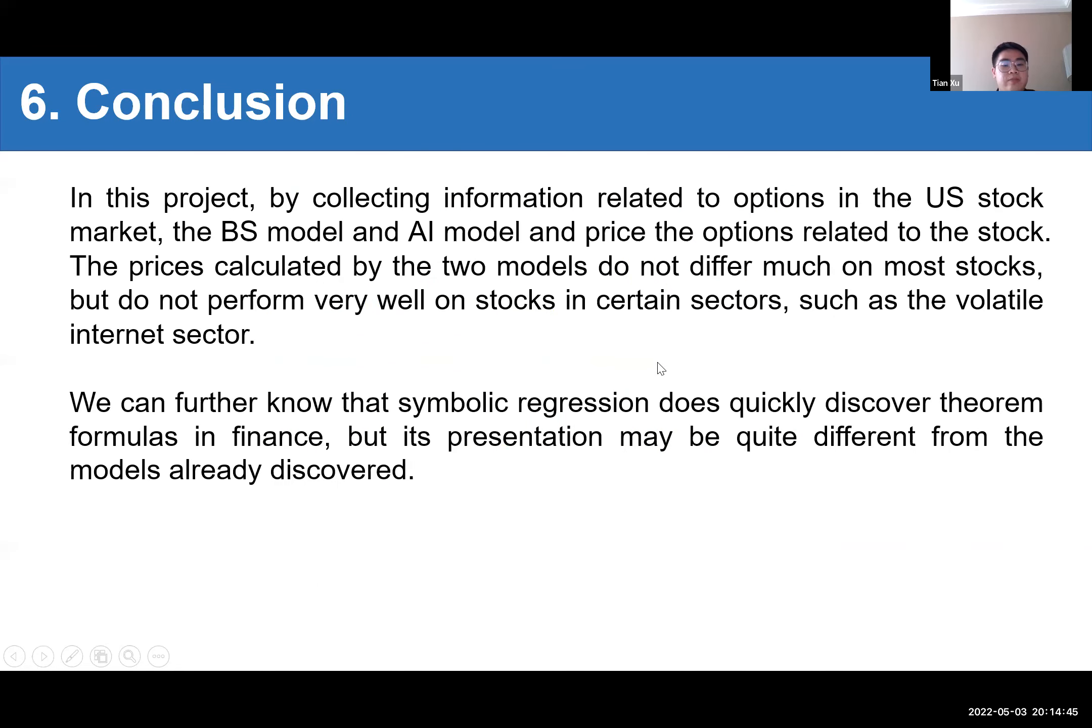At last, in this project, by collecting information related to options in the U.S. stock market, the Black-Scholes model and AI model price options related to the stock. The prices calculated by the two models do not differ much on most stocks, but do not perform very well on stocks in certain sectors such as the volatile Internet sector. We can further know that symbolic regression does quickly discover theorem formulas in finance, but its presentation may be quite different from the models already discovered. Thank you for your listening. That's all.